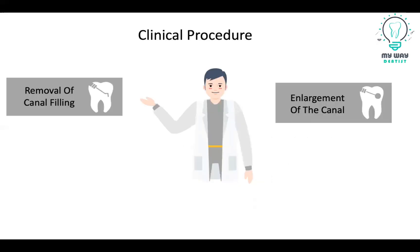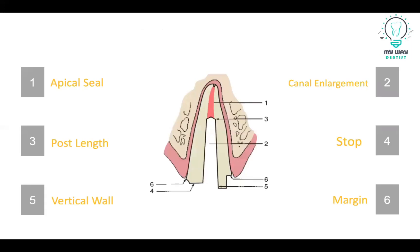Regarding the clinical procedure with the prefabricated fiber post, we have two phases: first, the removal of the canal filling, then doing the enlargement of the canal. During these two phases, we need to always remember and emphasize on these six points. Each point corresponds with the number shown in the picture, and we will talk about them. First of all, the apical seal — we need the apical seal on the apical third to seal the accessory canals in that area, which come with a high percentage.